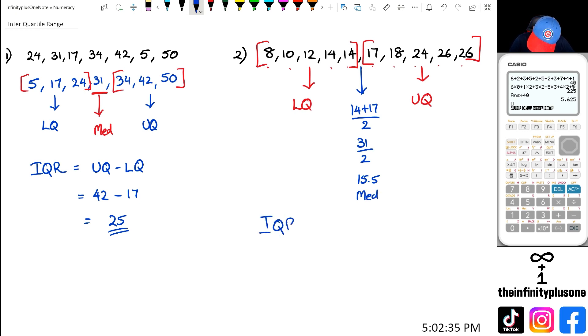But we want to actually work out what interquartile range is. So that is upper quartile minus lower quartile. We've got 24 take away 12, which is going to give us an interquartile range of 12.